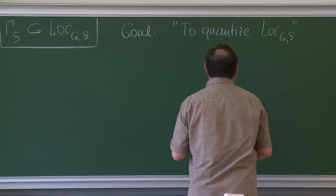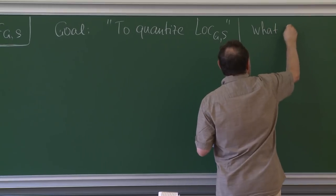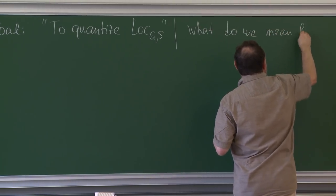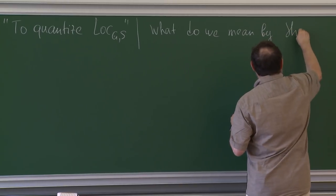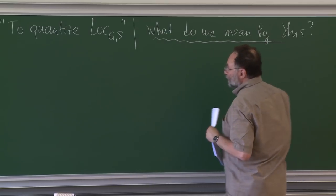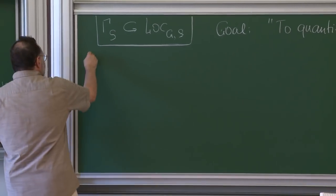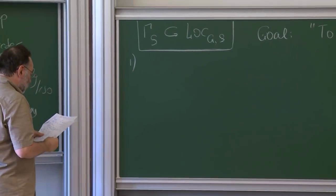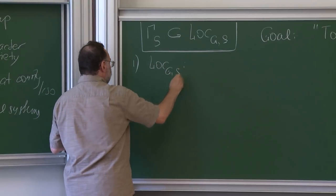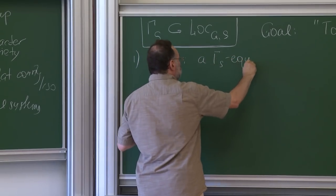But we immediately have a question about what we mean by this. The first comment is that the space of local systems is a Gamma-S equivariant Poisson space.